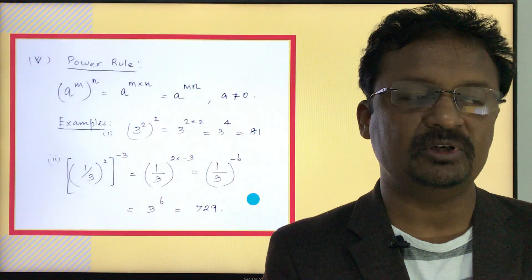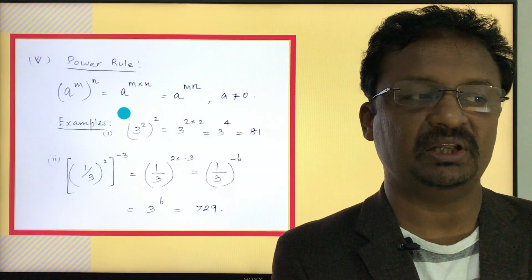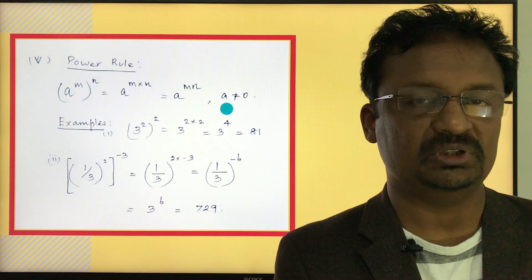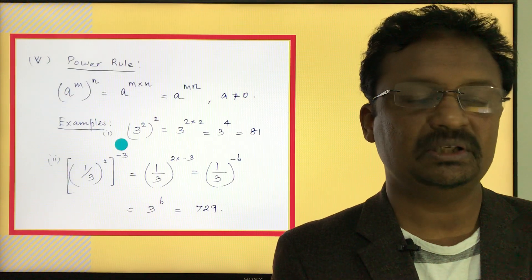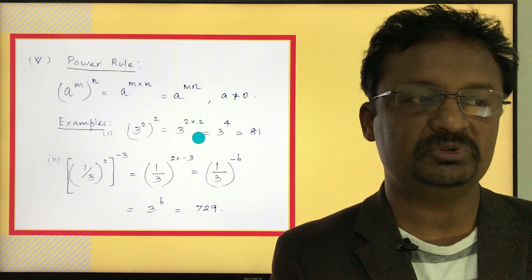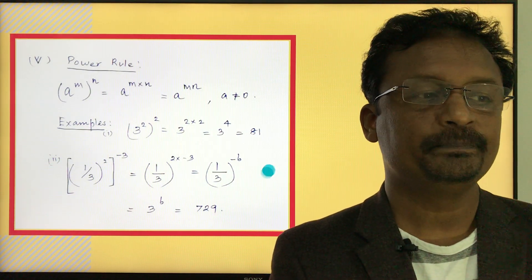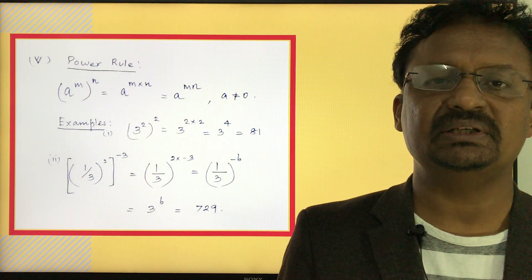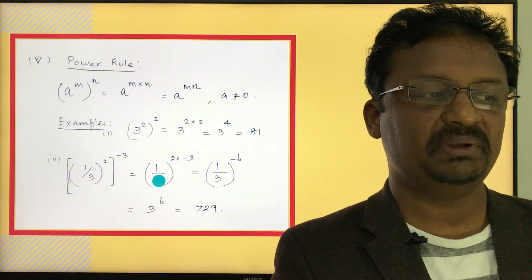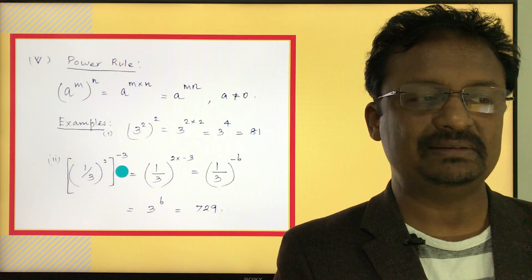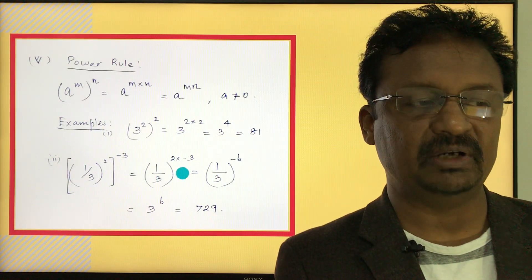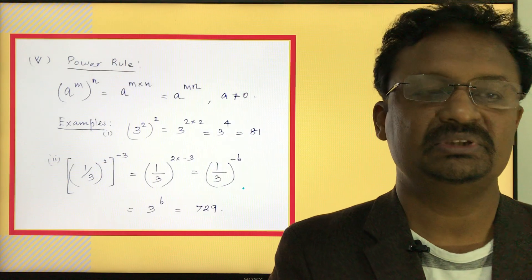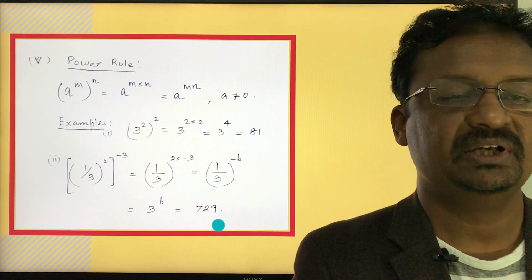Rule five is called the power rule: a to the power of m, raised to the power of n, equals a to the power of m times n, written as a to the power of mn. The base a must not be zero. For example, 3 to the power of 2, raised to the power of 2, equals 3 to the power of 4, which is 81. Another example: one-third to the power of 2, raised to the power of negative 3, equals one-third to the power of negative 6, which becomes 3 to the power of positive 6, equal to 729.